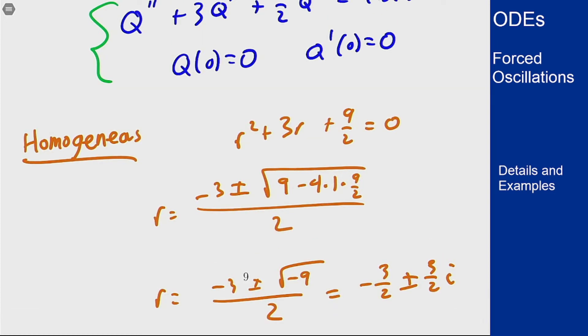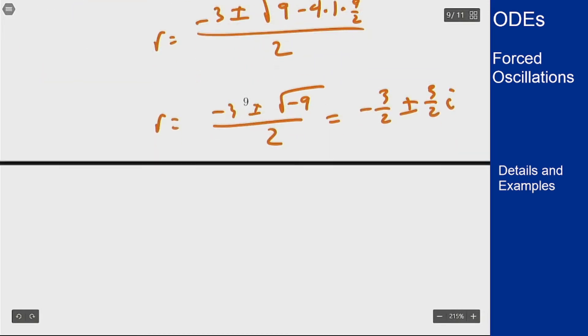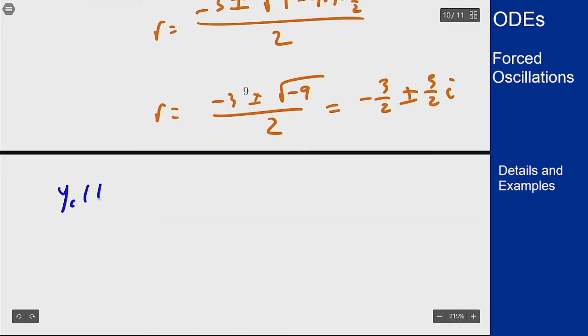Which means that the general solution to the homogeneous part is y_c(t) equals c1 e to the minus 3/2 t cosine of 3/2 t plus c2 e to the minus 3/2 t sine of 3/2 t.